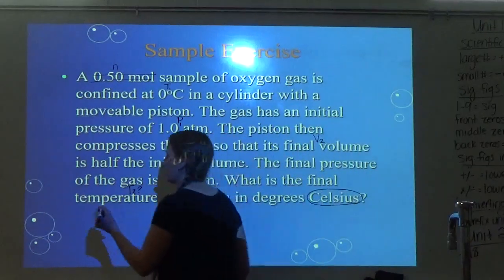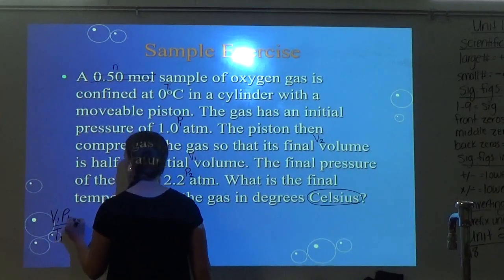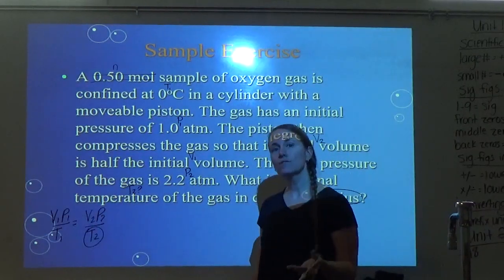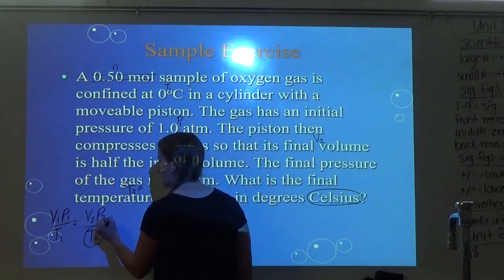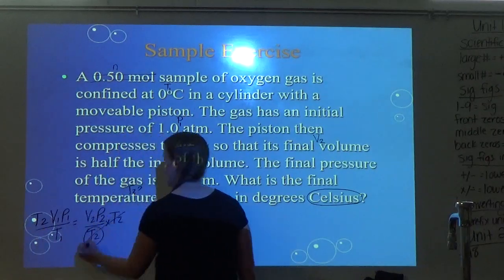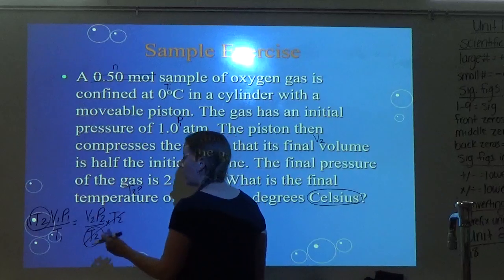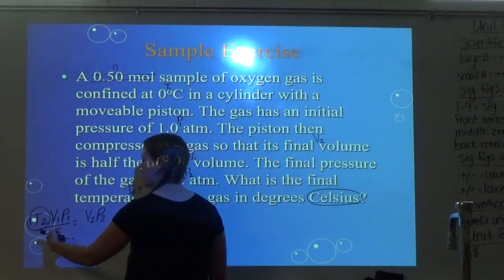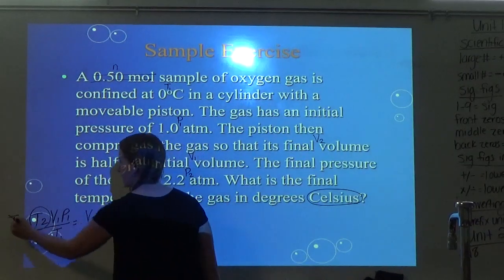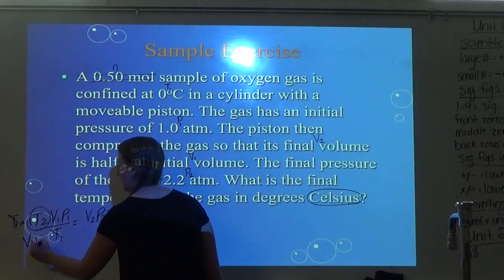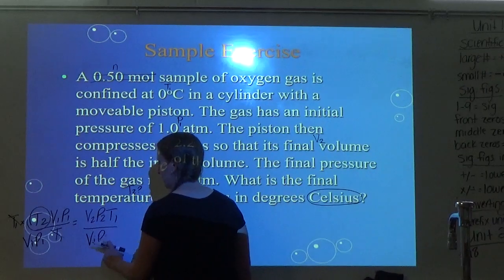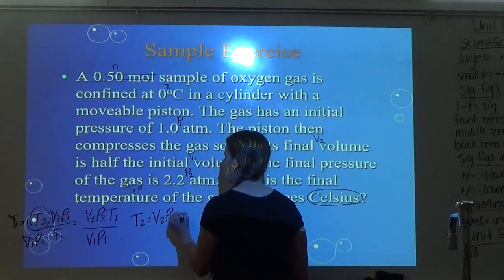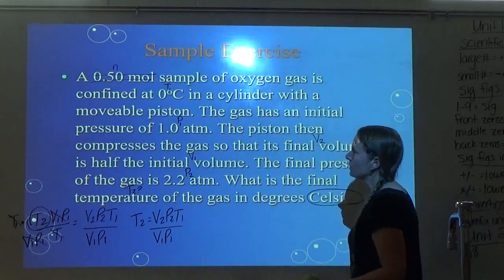Since I see P's, V's, and T's, I use the combined gas law. The number of moles doesn't fit — that's extra information. The formula is V1P1/T1 equals V2P2/T2, solving for T2 — which is in the denominator. First multiply both sides by T2 to move it to the numerator, then multiply by T1 and divide by V1 and P1. This gives T2 equals V2 × P2 × T1 over V1 × P1.